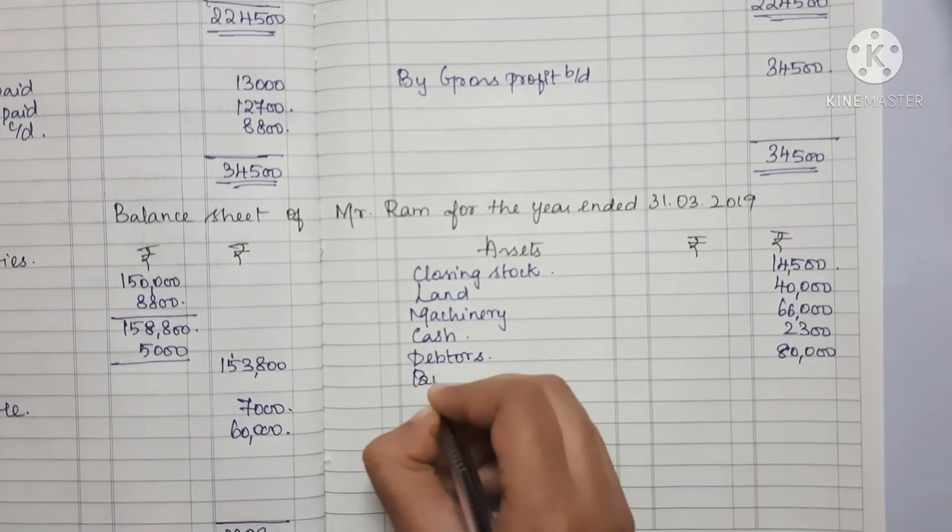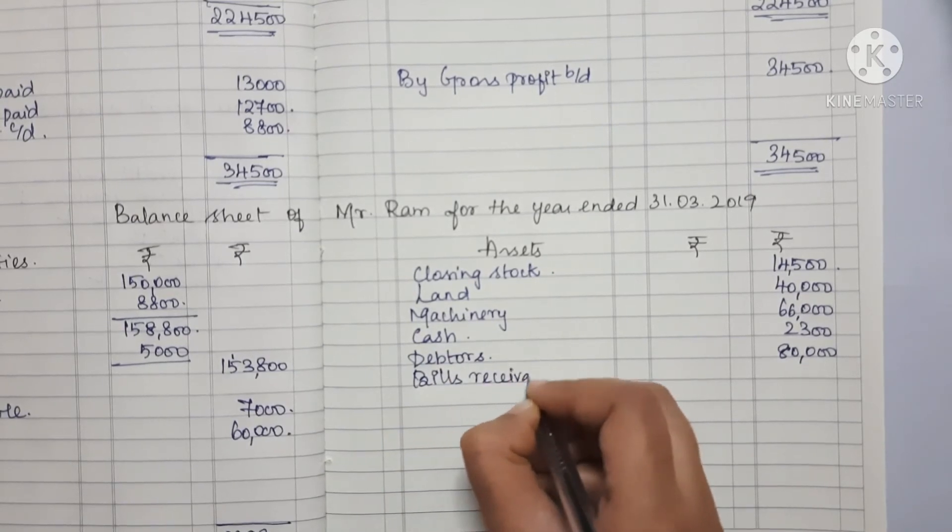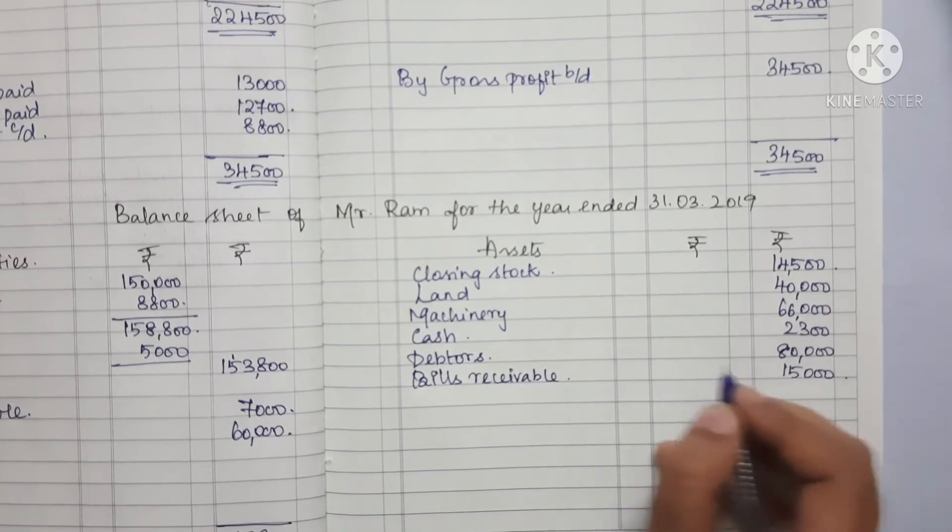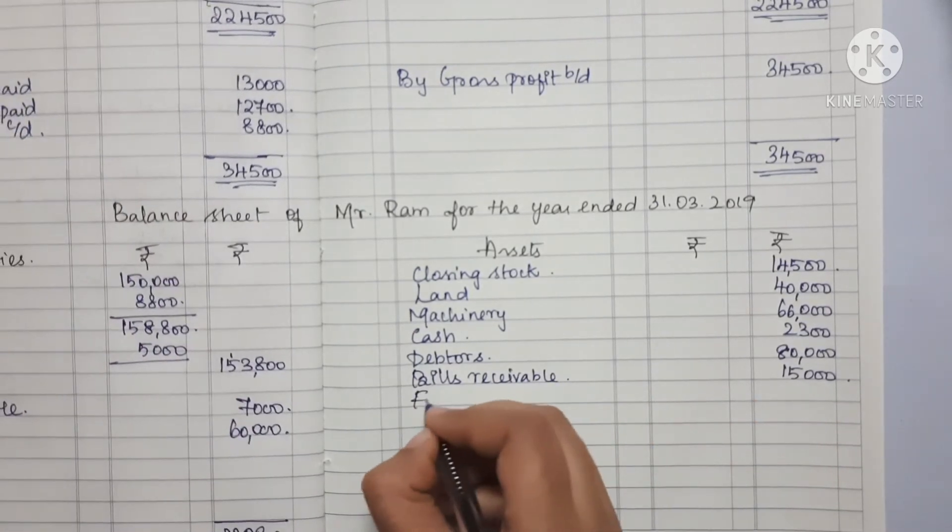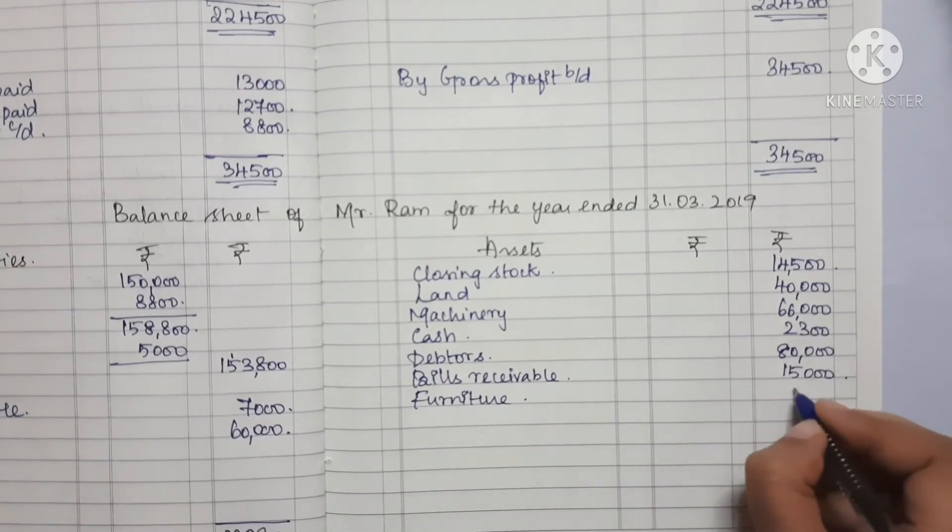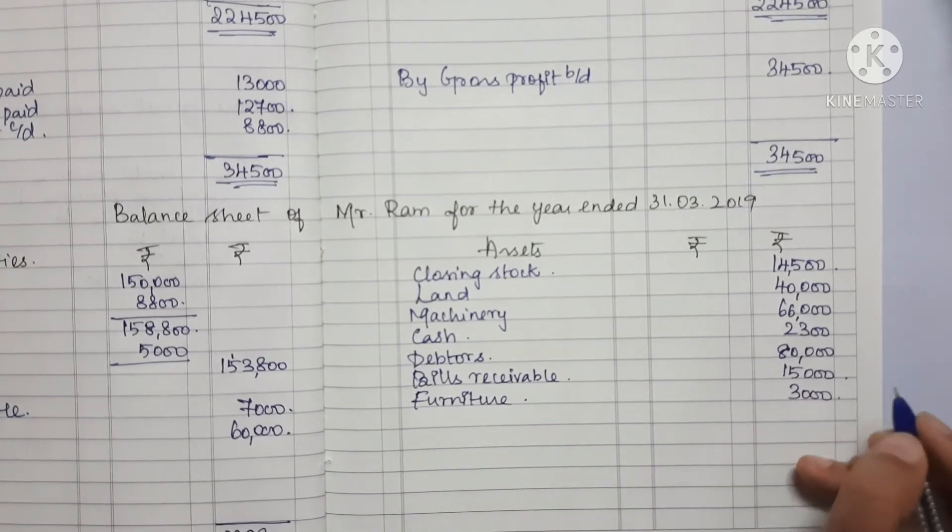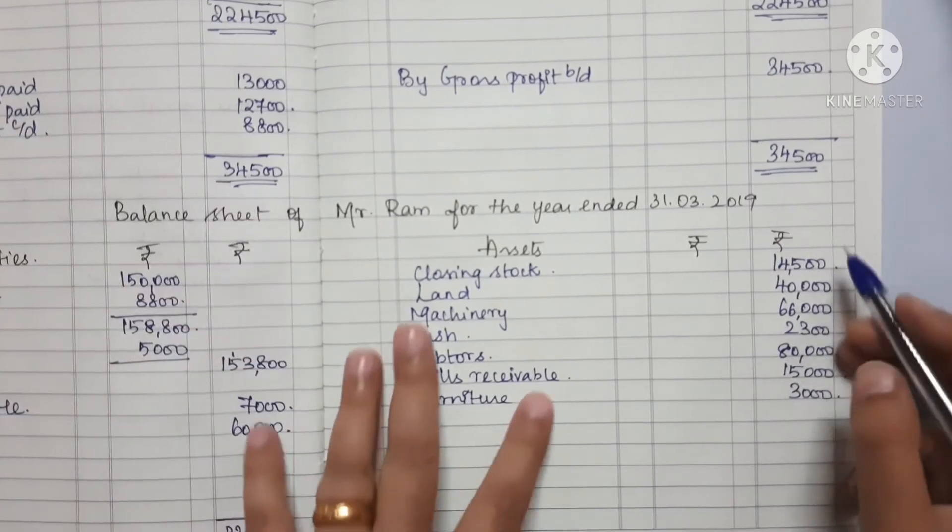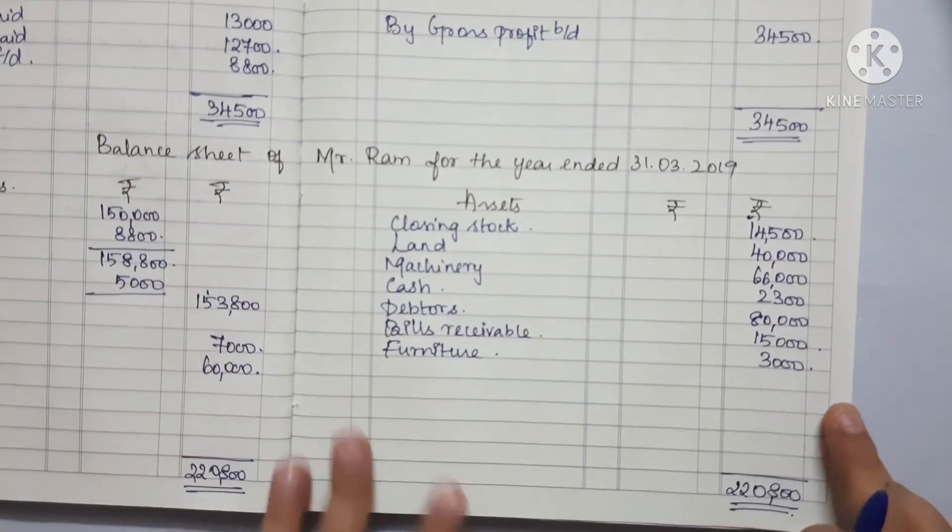Next, Bills Receivable is 15,000. Last one is Furniture, which is 3,000. We can add these items to get the total.